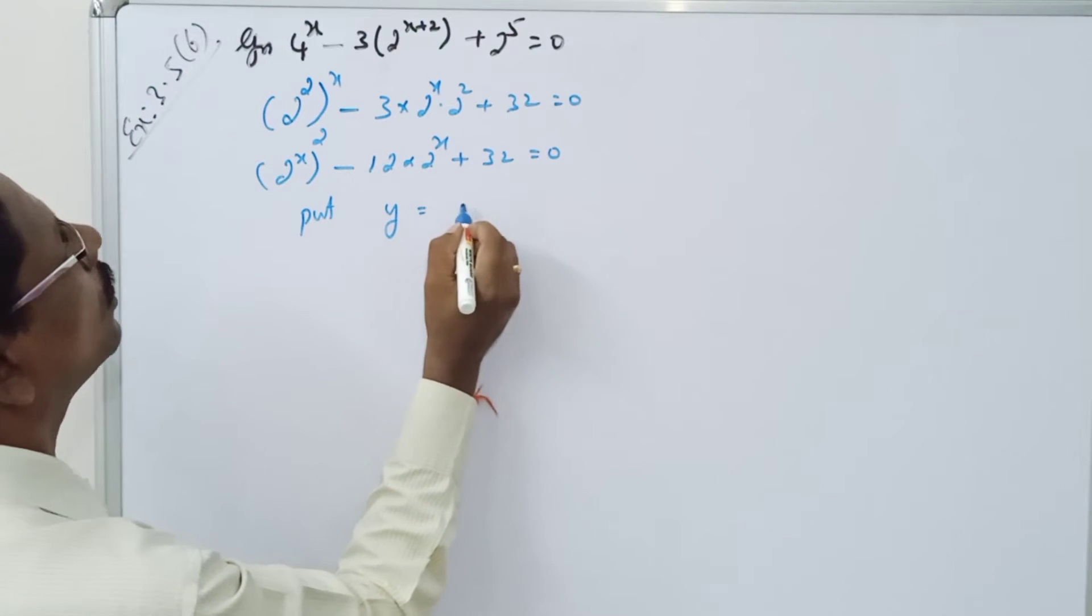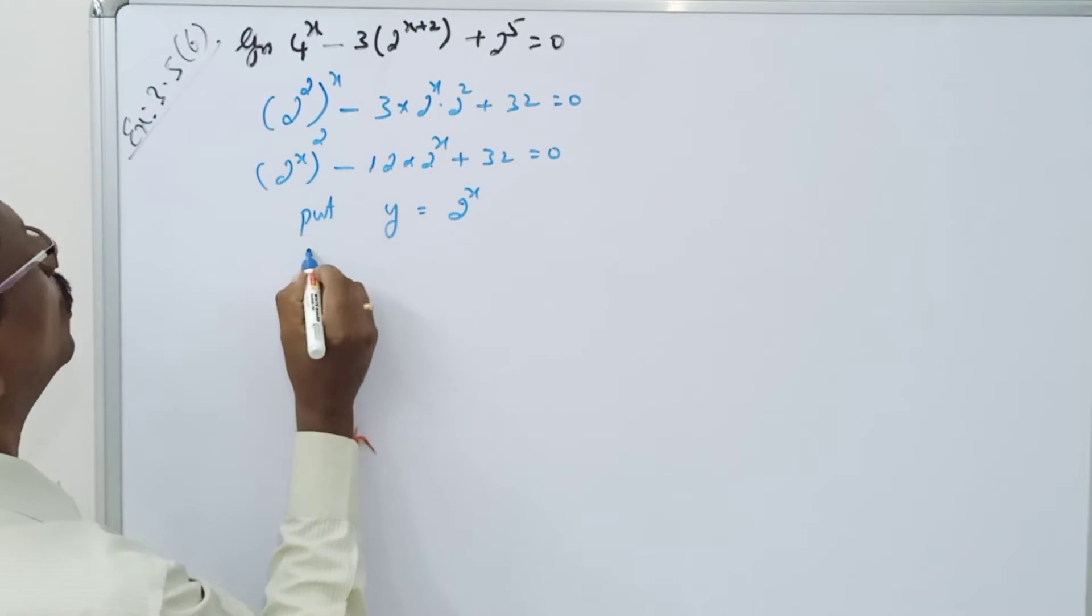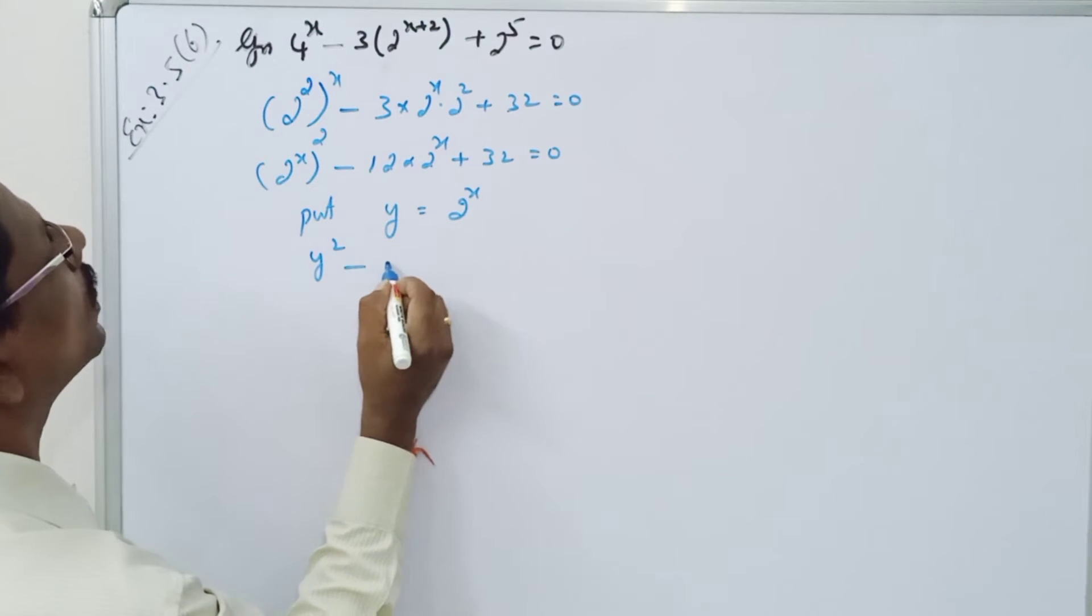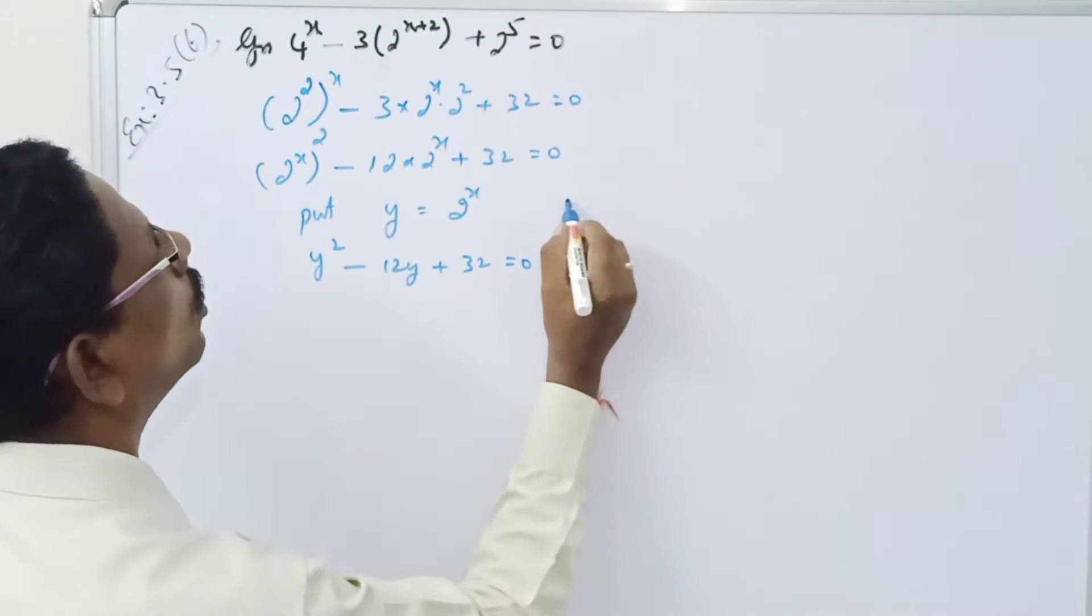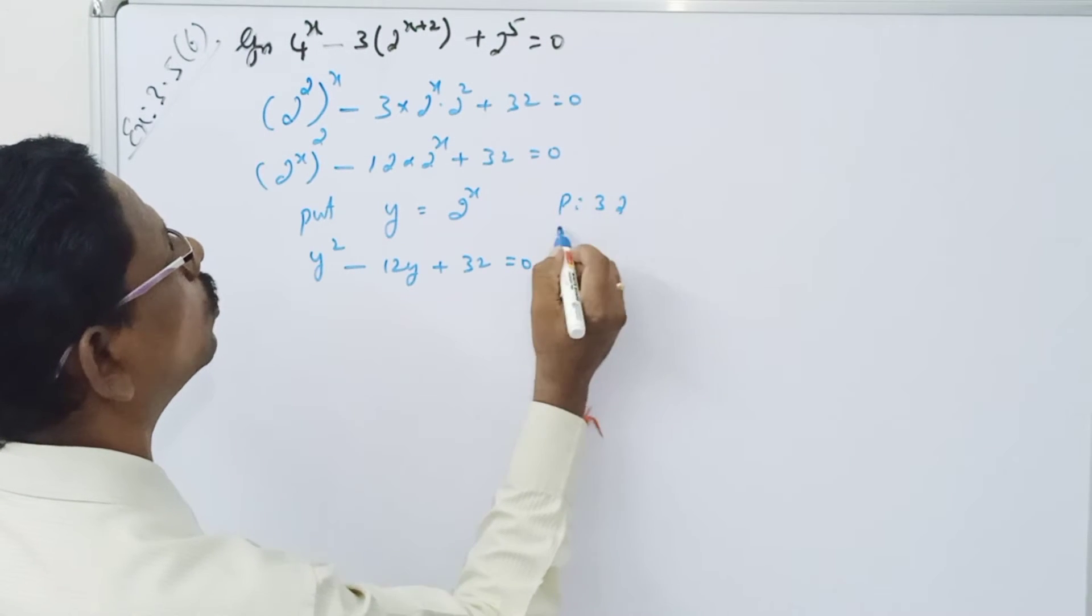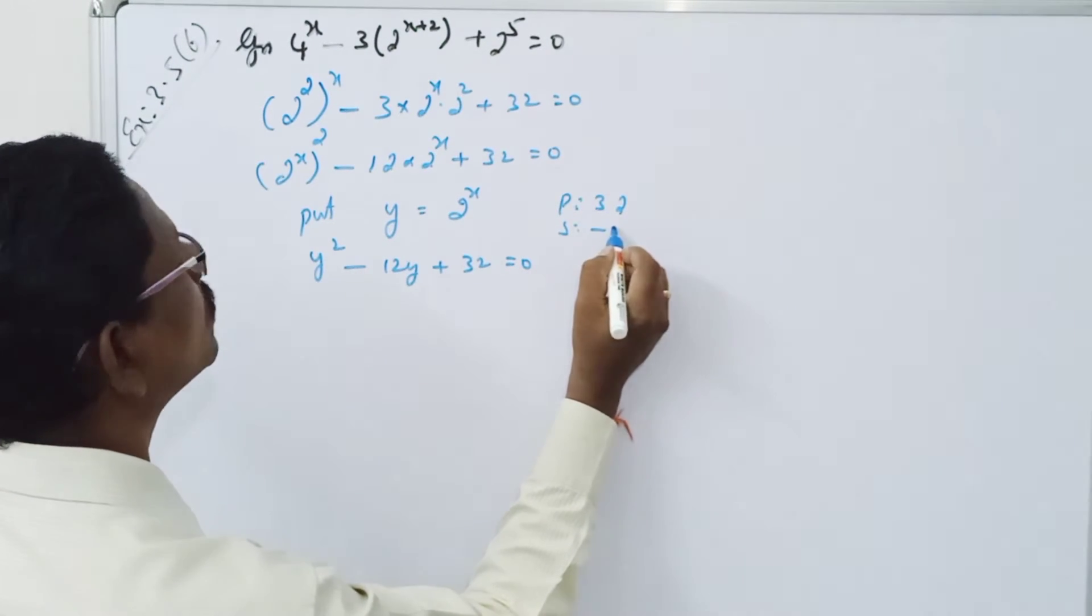Put y equal to 2 to the power x. So here it is y squared minus 12y plus 32 equals 0. Product 32, sum minus 12.